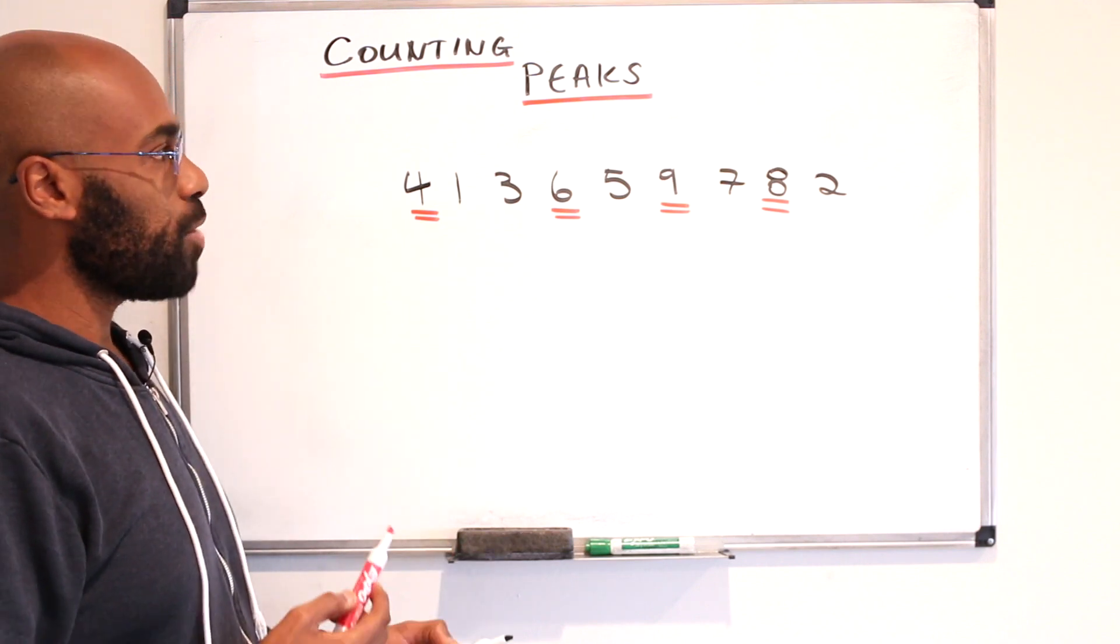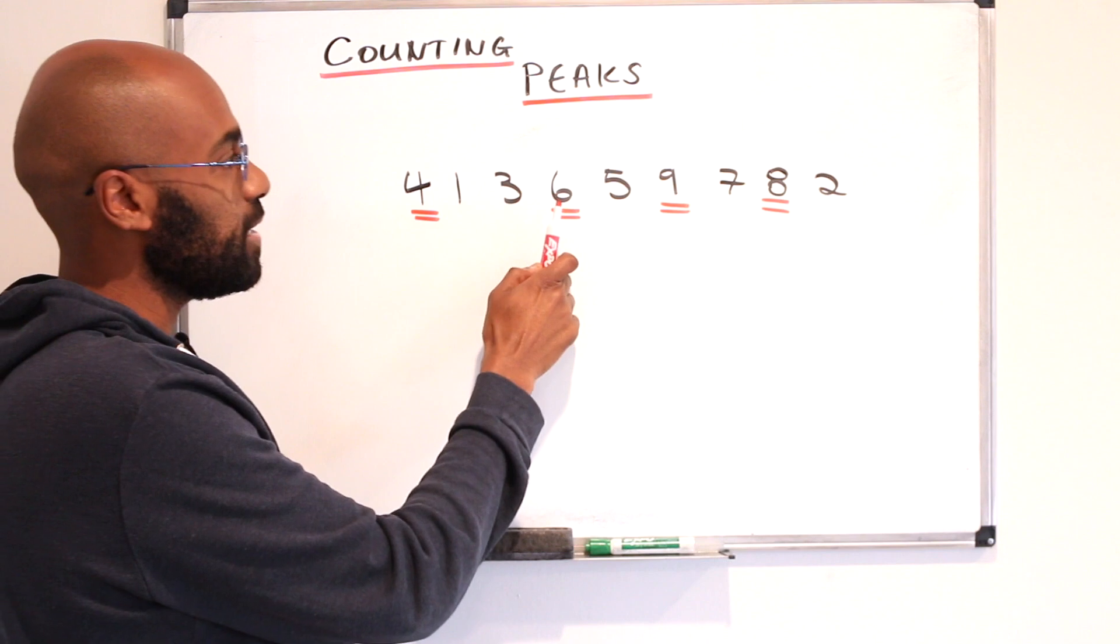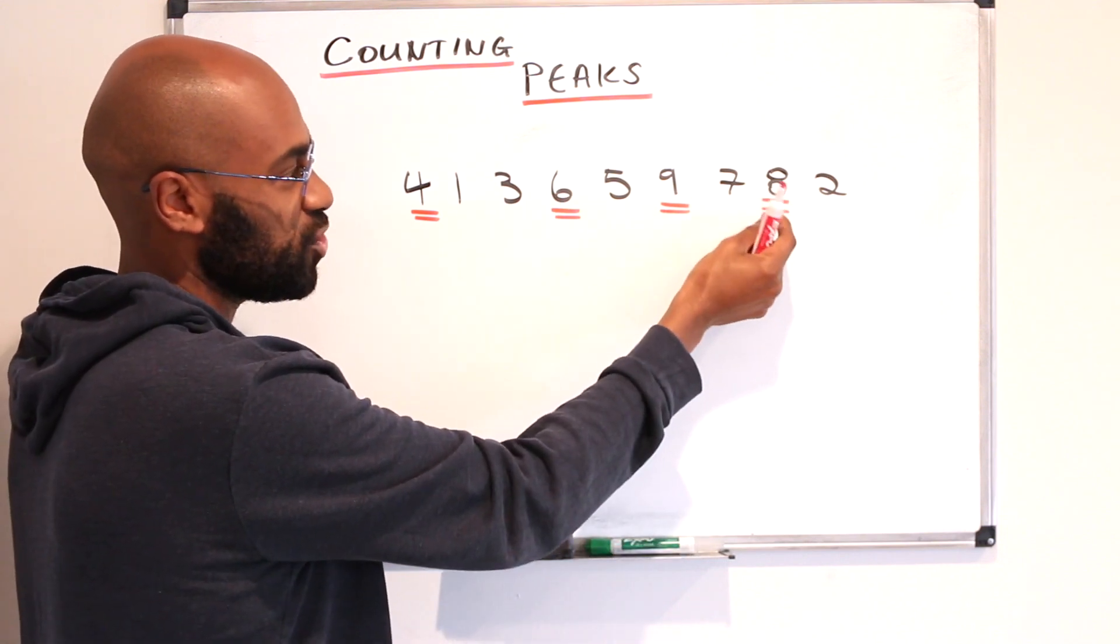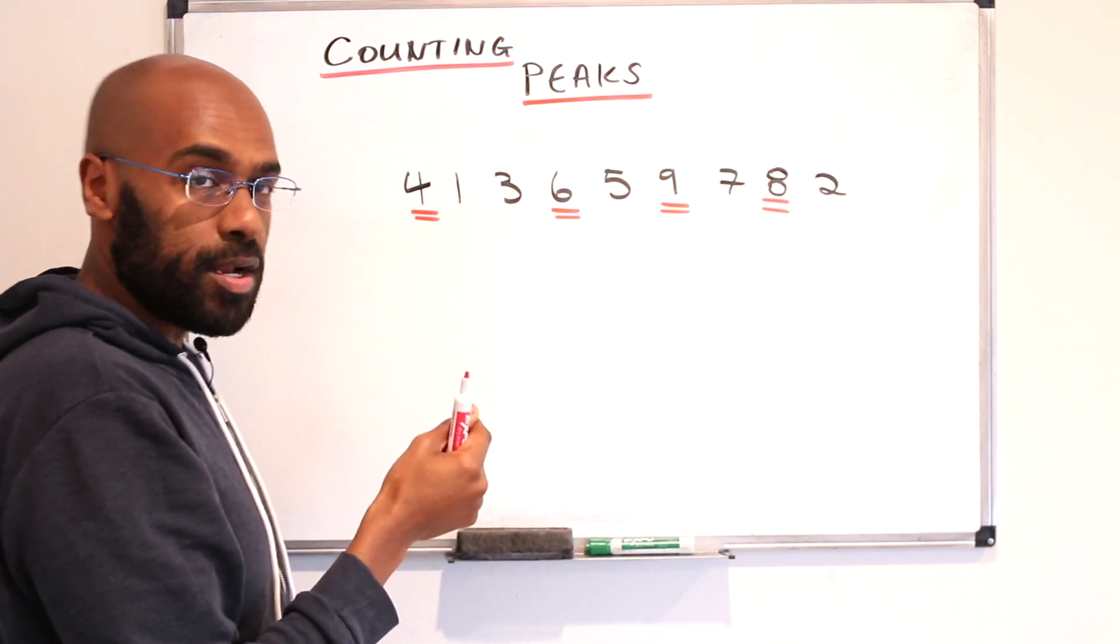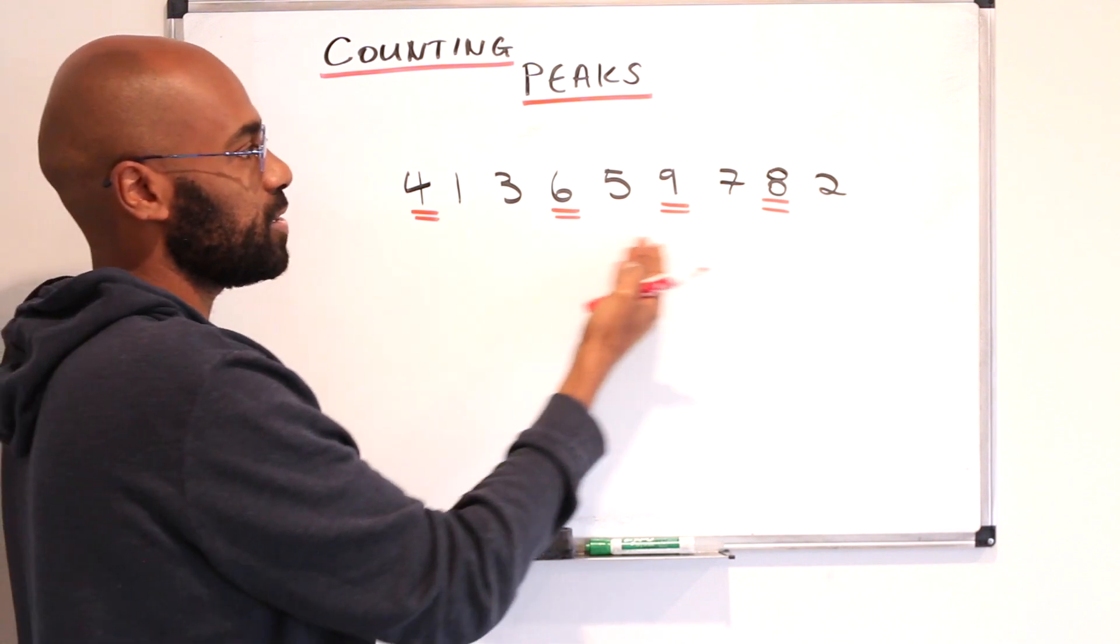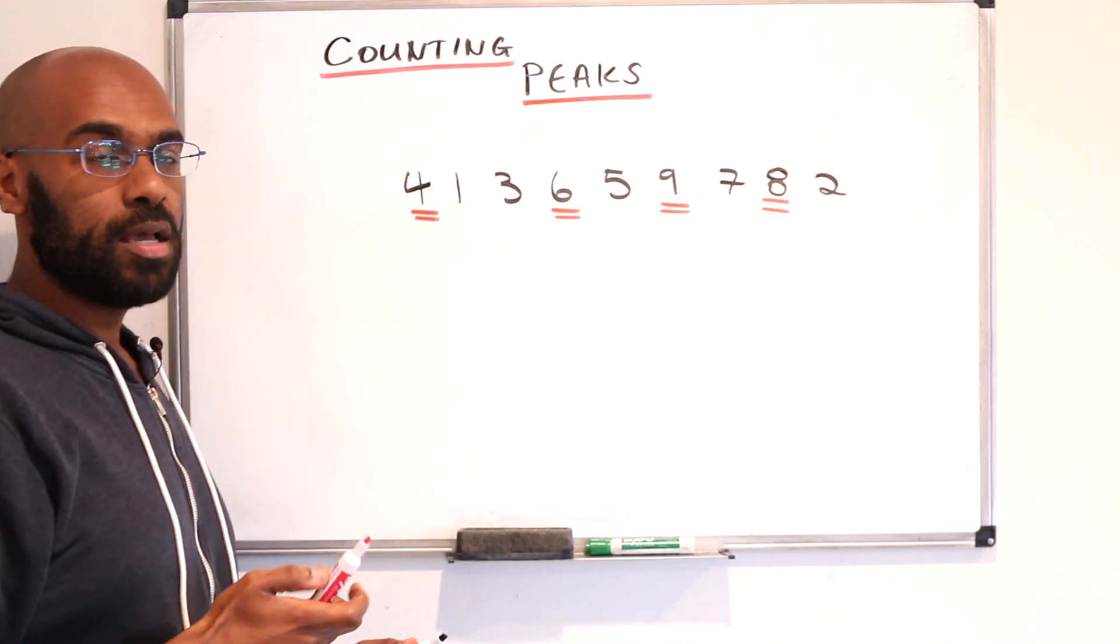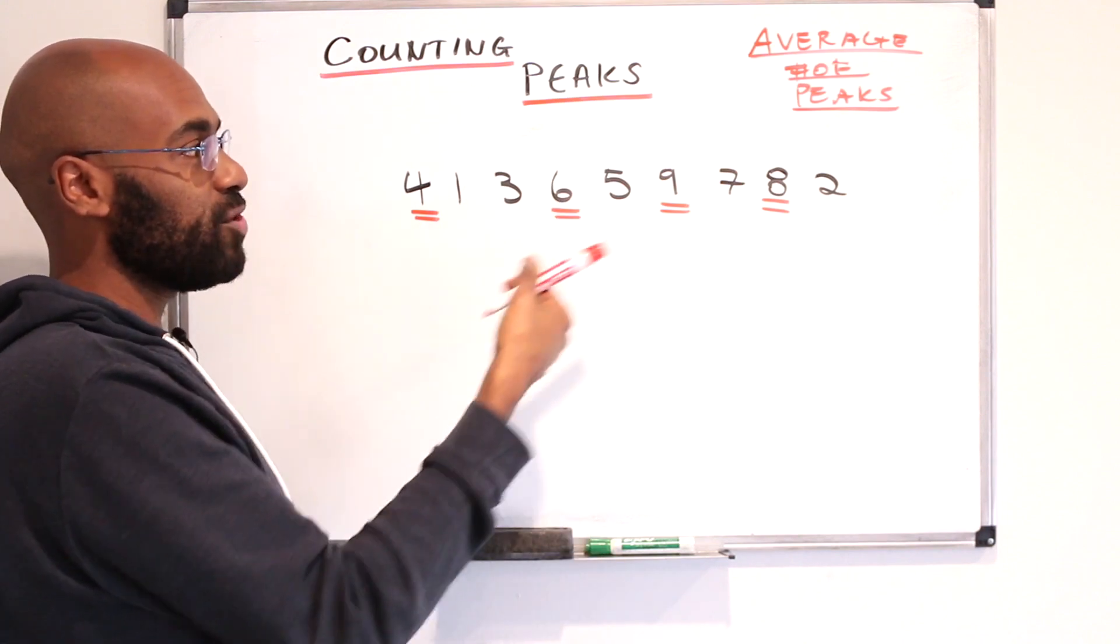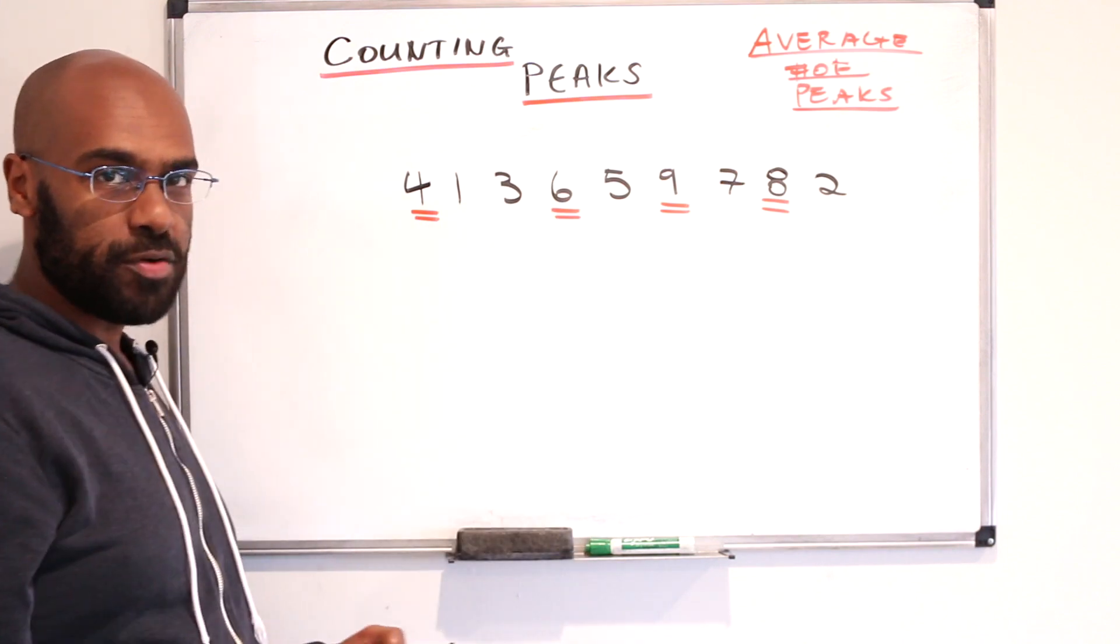So today we're going to talk about this interesting problem of counting the number of peaks or positions where a number is greater than the numbers next to it in all rearrangements of the numbers 1 through 9. And the question we're going to ask is, what's the average number of peaks among all of these rearrangements?